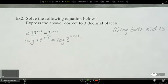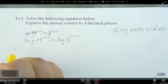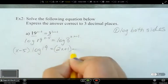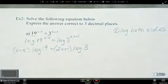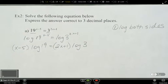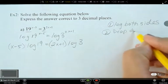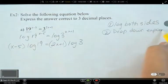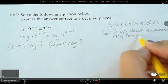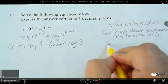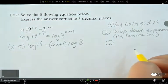Which law are we going to use to bring our exponents down? So that is the third one. (x-5) I'm going to keep that in brackets. Log 19 equals (2x+1) in brackets, log 3. Now, drop down exponents. I'll just write down the steps here. So it's my favorite law. That's the exponent one. And then what do you think we're going to do next?